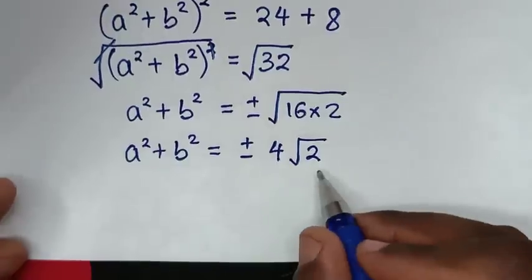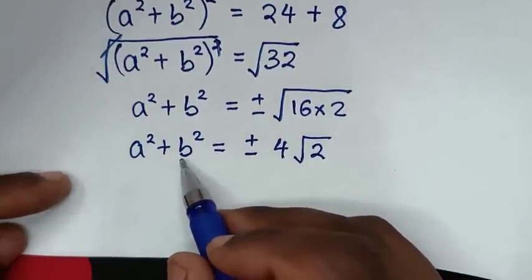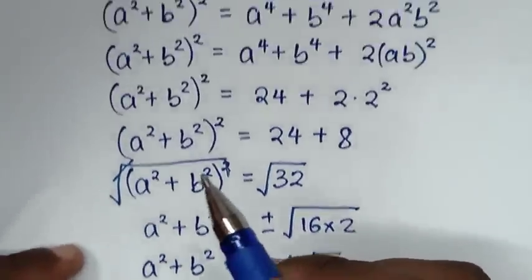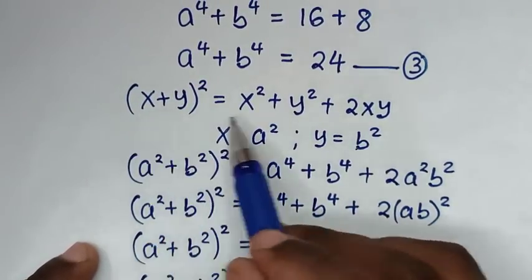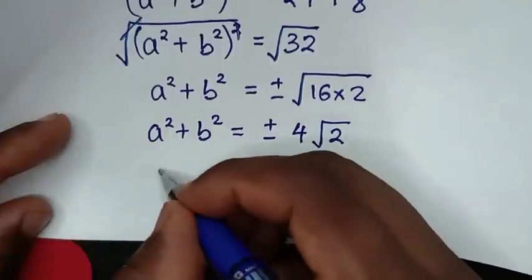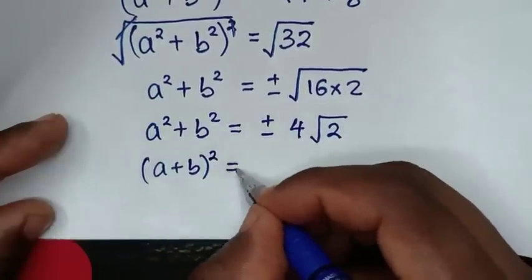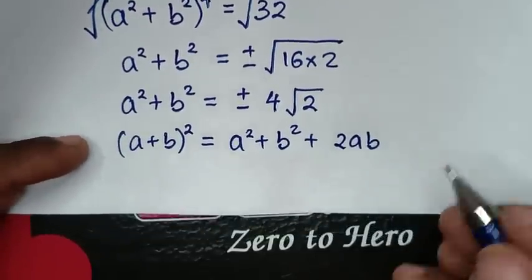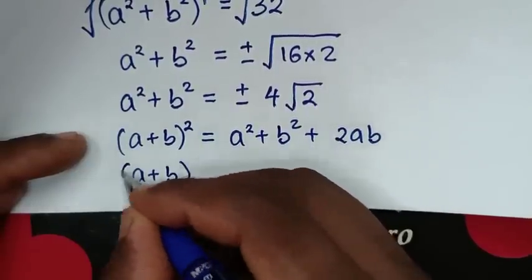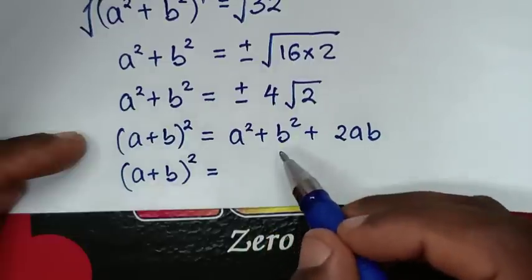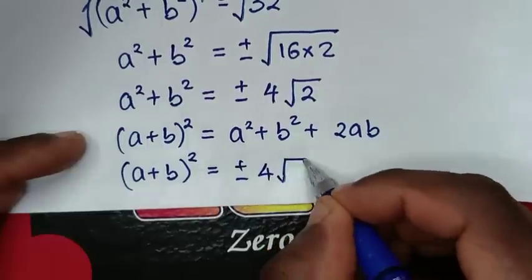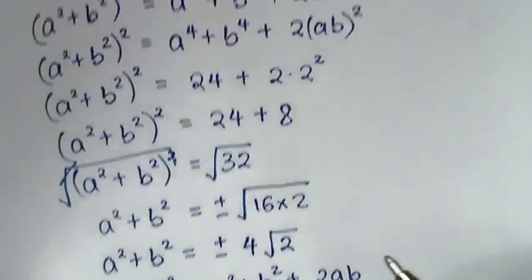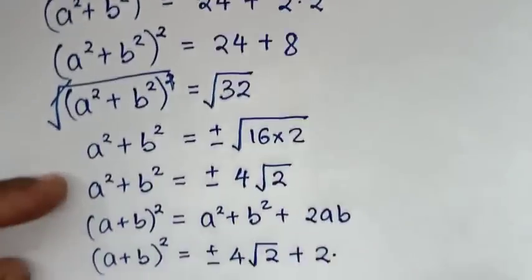Now that we have a² + b², we go on to find a + b. We apply the same rule but in terms of a and b: (a + b)² = a² + b² + 2ab. So (a + b)² equals plus or minus 4√2 plus 2ab, and since ab equals 2, that is plus 2 times 2.